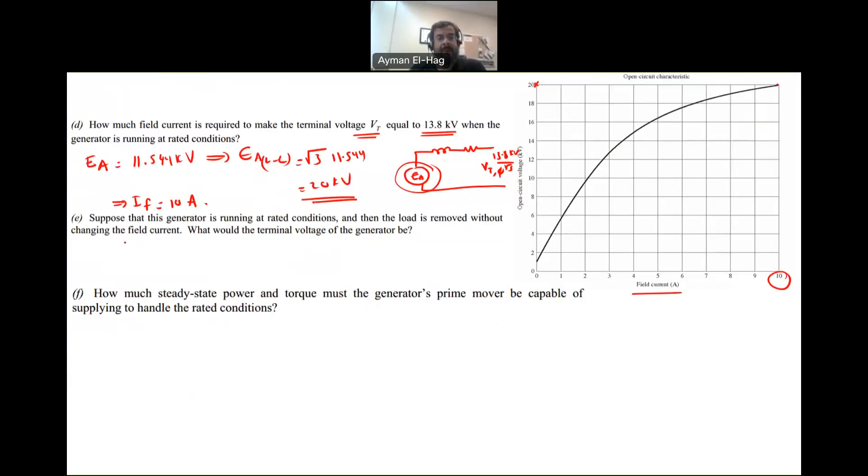Part E: Suppose the generator was running at rated conditions with load connected. V-terminal line-to-line is 13.8 kV, Ea internally is 20 kV. Then the load is removed suddenly without changing the field current. What does this mean? We know Ea equals K omega phi. K is constant, omega speed is constant, and phi from the field is also constant, so Ea will stay the same.